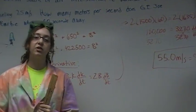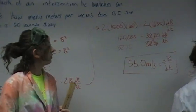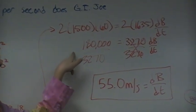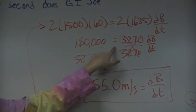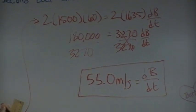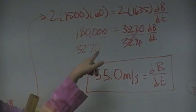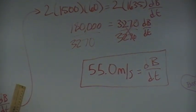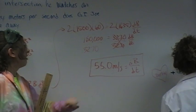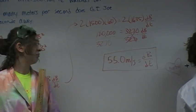And we would like to solve for DB over DT. So then we multiply all this out and we get 180,000 equals 3,270 times DB over DT. And then to solve for DB over DT, you will then divide each side by 3,270, which then gives you 55.0 meters per second.